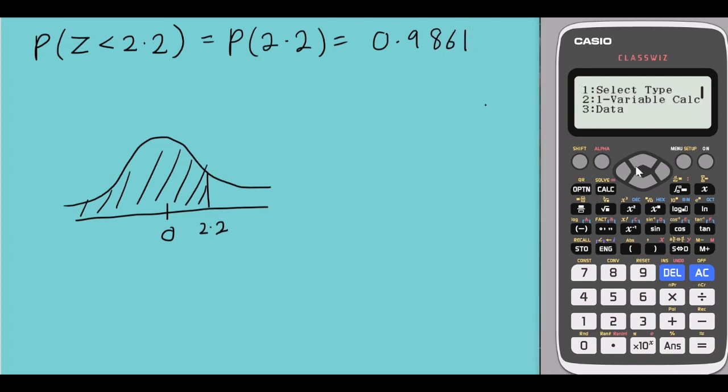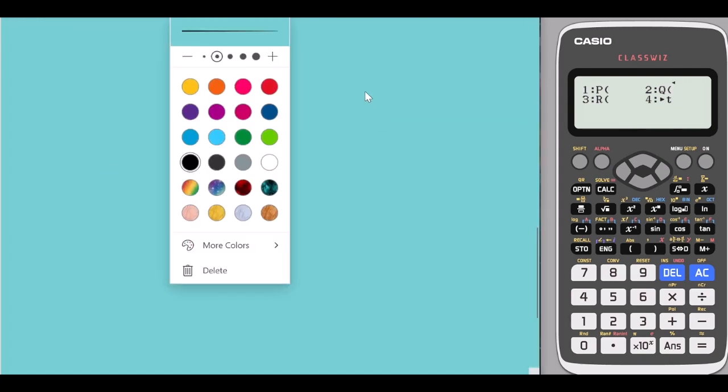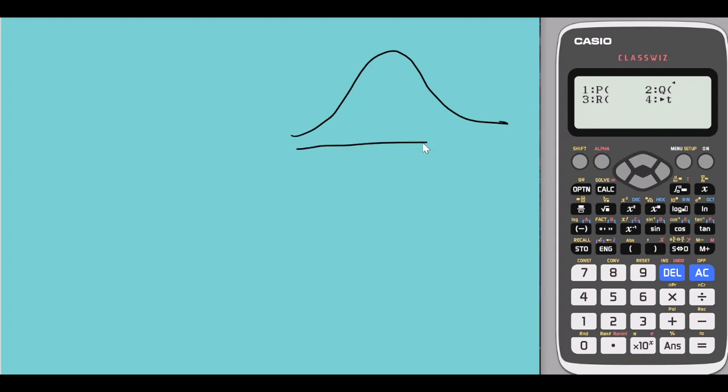Now, if I go back to option and scroll down to 4, you would see Q over here. So what does Q do? Q basically helps us find the probability from the middle or from the value of the mean.